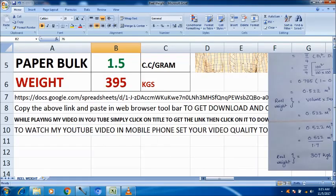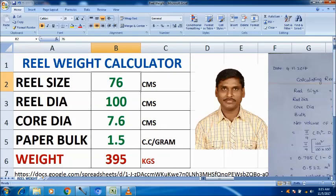And let us see how the calculator will work. Reel size 76 cm, reel dia 100 cm, core dia 7.6 cm, paper bulk 1.5 cc per gram. For that, reel weight is 395 kg.